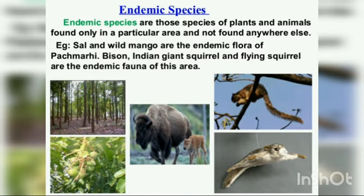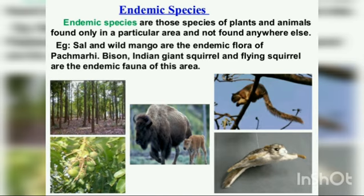Endemic species are those species of plants and animals which are found exclusively in a particular area. They are not naturally found here and there — they are not found anywhere else. They are particular types of animals and plants that are endemic to that zone, state, or country.